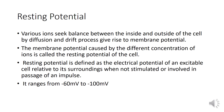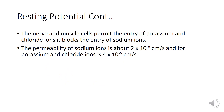The resting potential ranges from minus 60 millivolts to minus 100 millivolts. Nerve and muscle cells permit the entry of potassium and chloride ions but block the entry of sodium ions. The permeability of sodium ions is about 2 × 10⁻⁸ cm/s, and for potassium and chloride ions it is 4 × 10⁻⁶ cm/s.